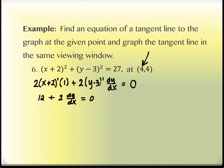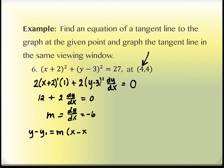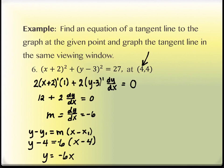That's exactly what we needed — the slope. The equation of a line: y1 and x1 are both 4, m is negative 6. Cleaning it up: y equals negative 6x plus 28, since negative 6 times negative 4 is positive 24 plus the 4 from the other side is 28.